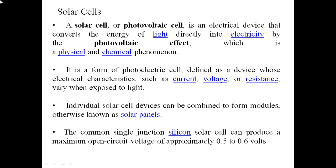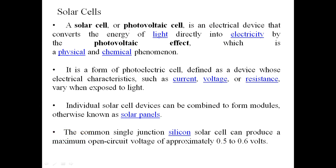What does a solar cell indicate? A solar cell is nothing but a photovoltaic cell. It primarily converts the energy of light directly into electricity — in short, a conversion of light energy to electrical energy — by the effect called the photovoltaic effect, which is a combination of physical and chemical phenomena.